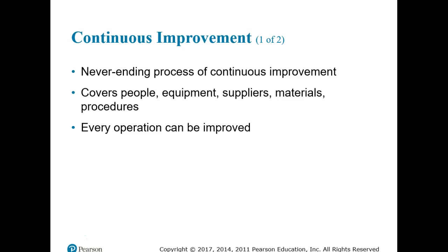Continuous improvement is like a race with no finish line. Total quality management requires a never-ending process of continuous improvement that covers people, equipment, suppliers, materials, and procedures. The basis of this philosophy is that every aspect of an operation can be improved, and the end goal is perfection — which is never achieved but always sought.